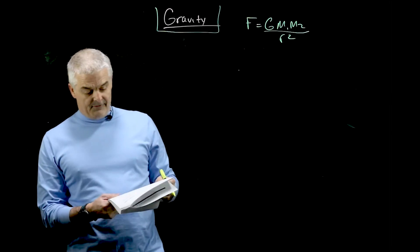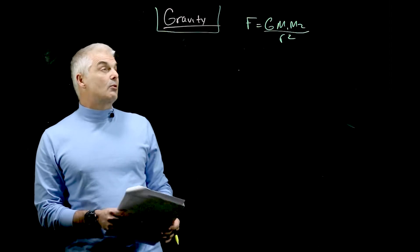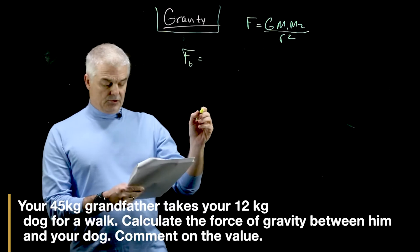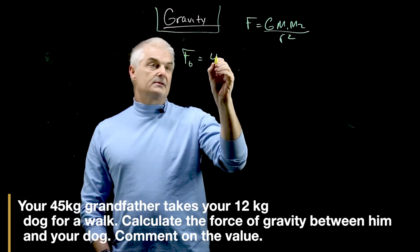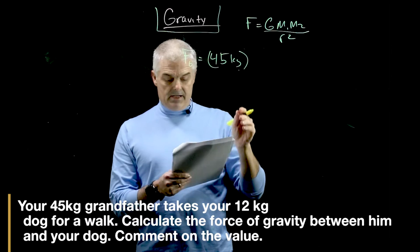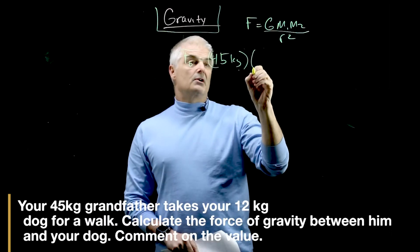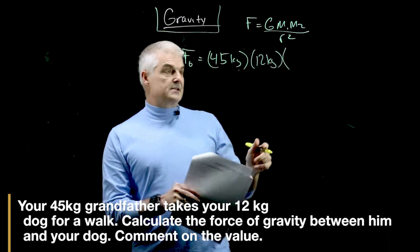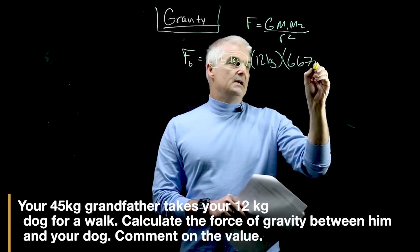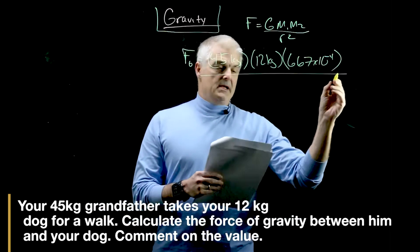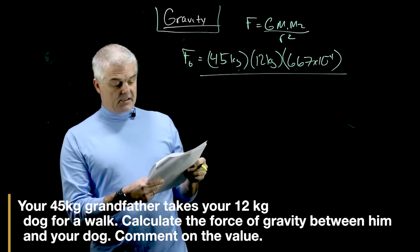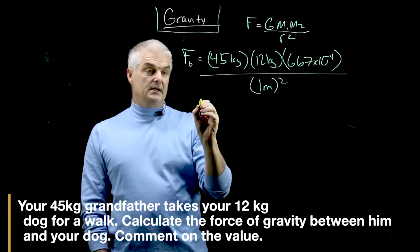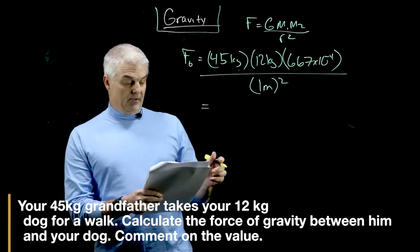We've got the 45 kilogram grandfather and the 12 kilogram dog. What's the force of gravity between the two of them? F_g equals 45 kilograms times the 12 kilogram dog. That's m1 times m2 times 6.67 times 10 to the minus 11th newtons, divided by r squared. And r is the distance between them, one meter apart, squared. You get the math and you get this number.